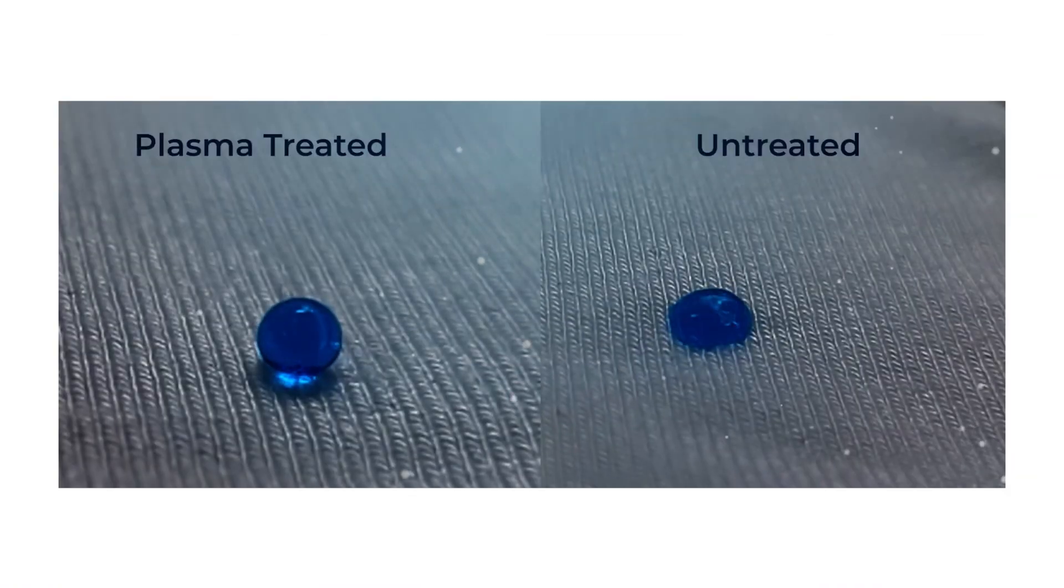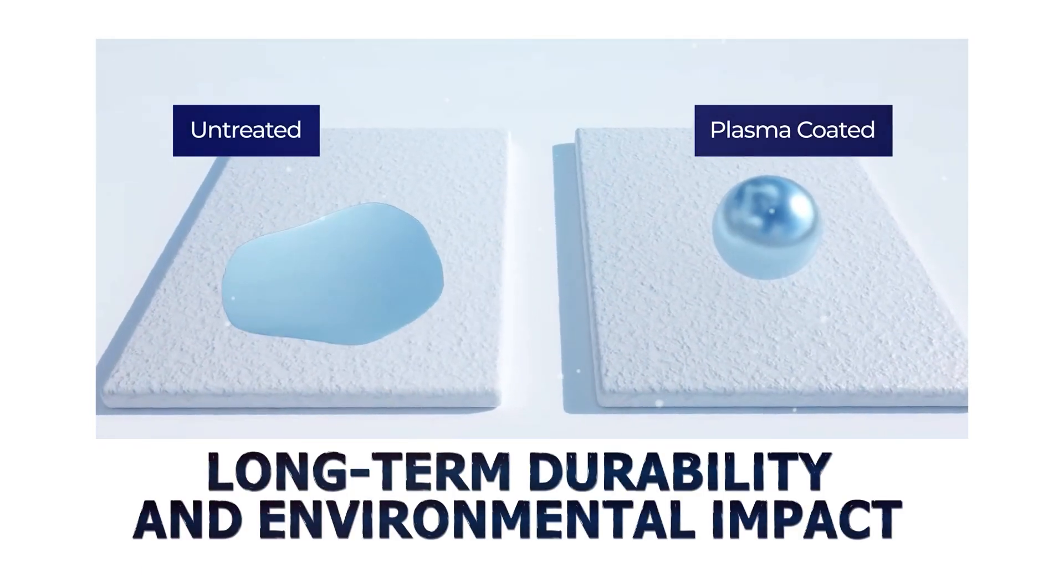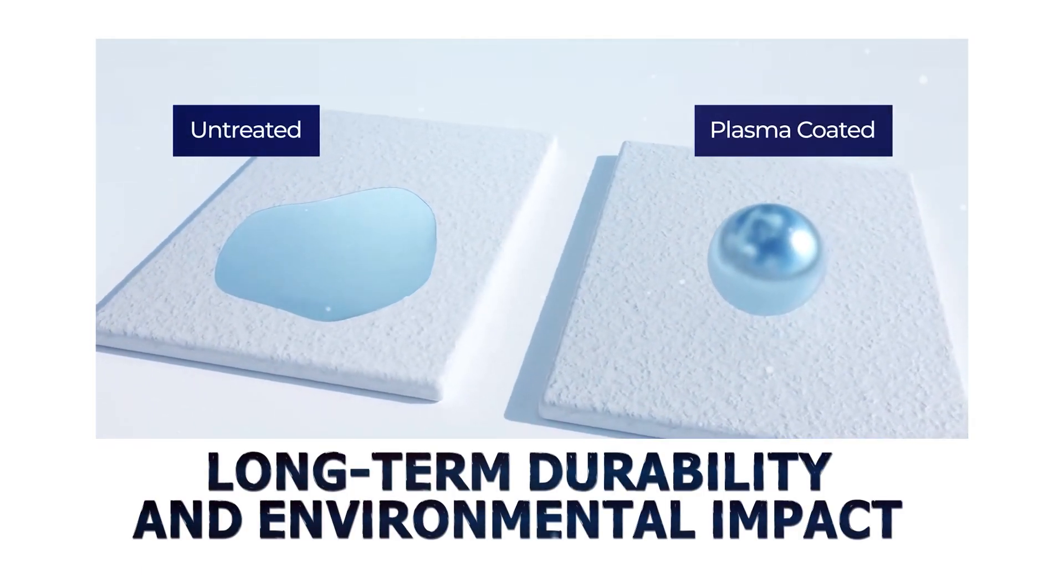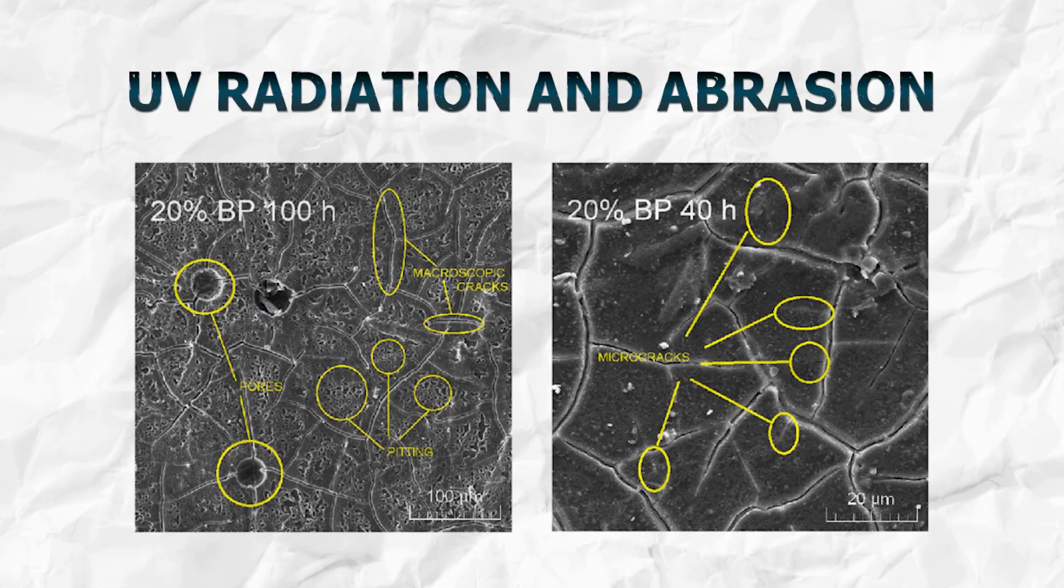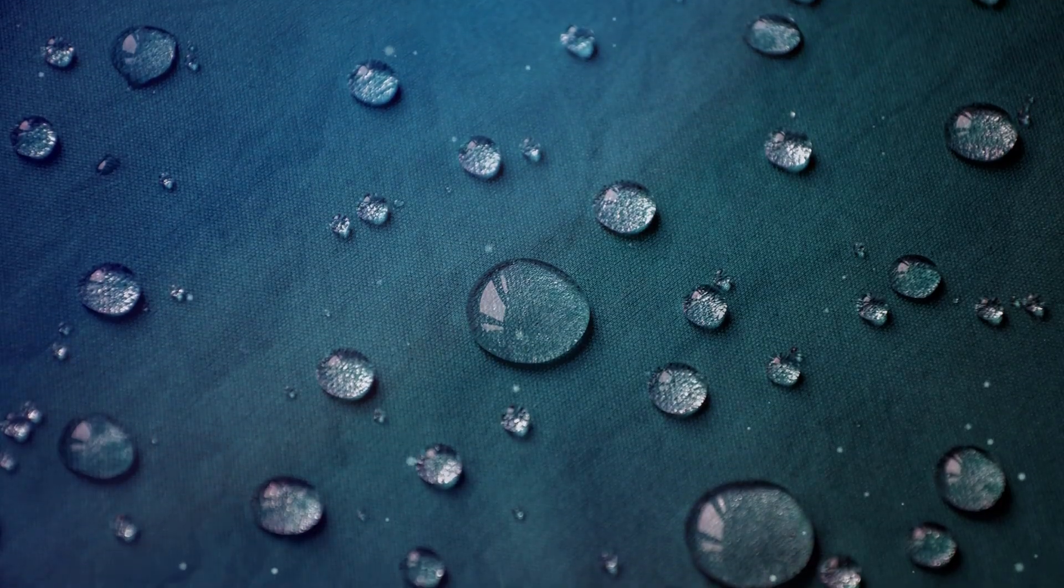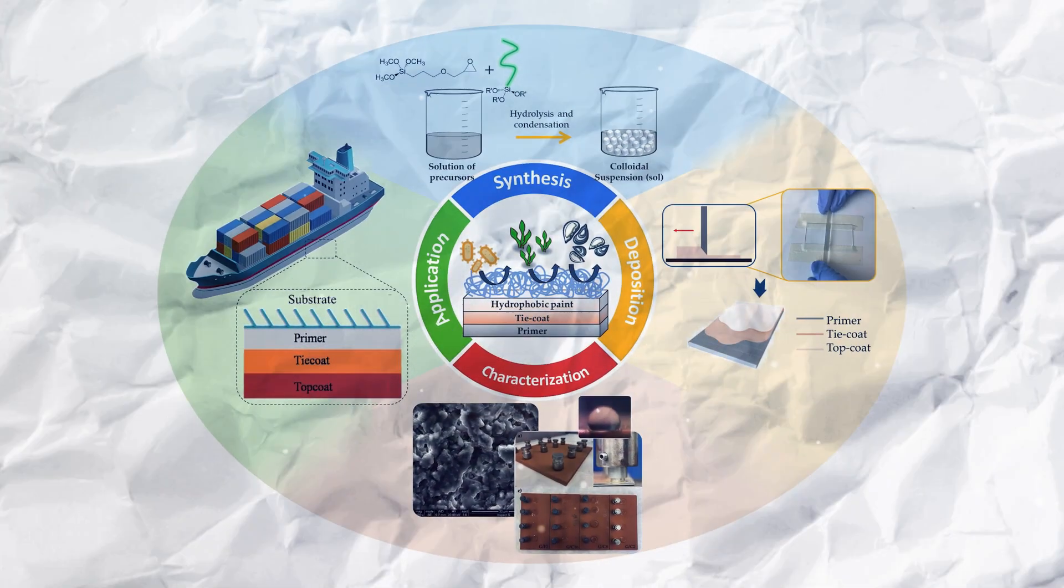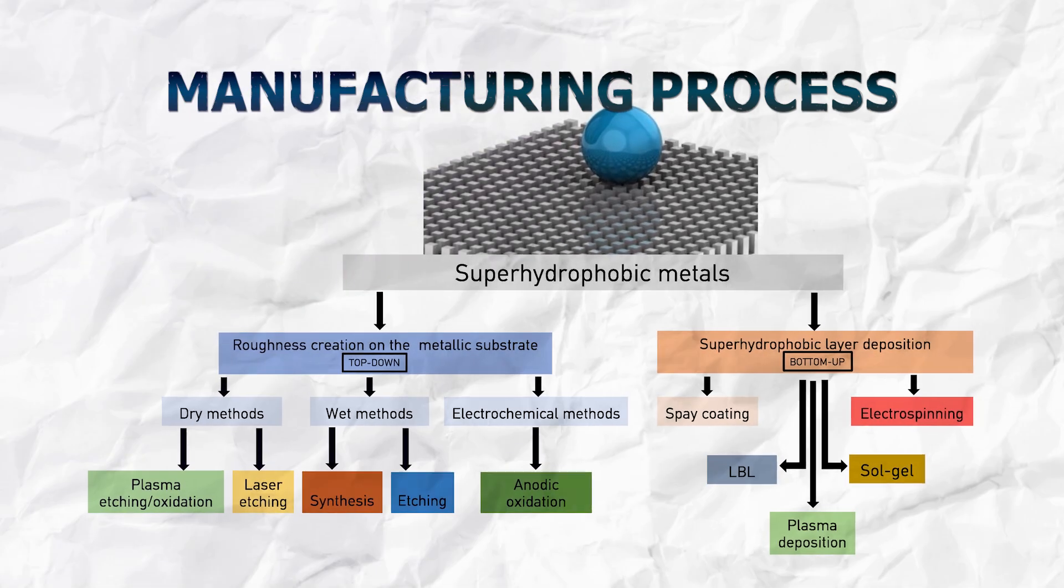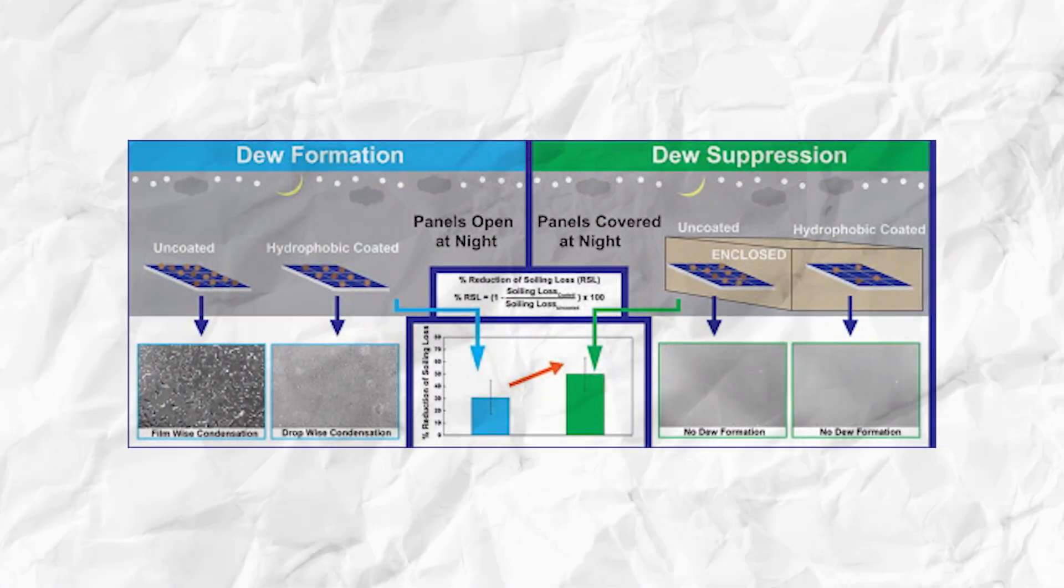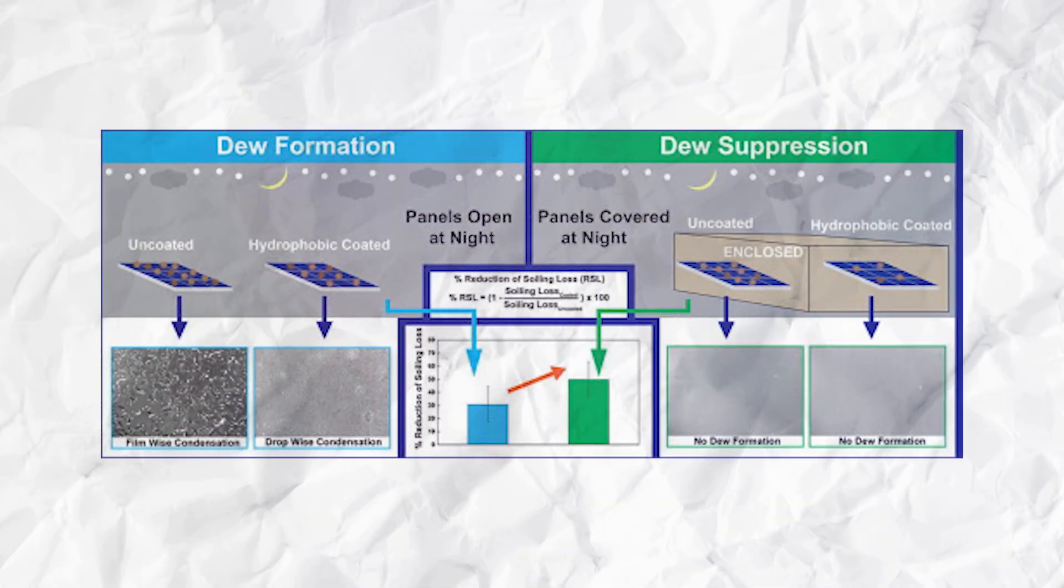While hydrophobic coatings have demonstrated remarkable success, challenges persist, particularly in terms of long-term durability and environmental impact. The durability of coatings under harsh conditions, such as exposure to UV radiation and abrasion, remains a focal point for improvement. Environmental considerations also drive research towards developing eco-friendly hydrophobic coatings. The reduction or elimination of harmful chemicals in the manufacturing process and the biodegradability of coatings are areas garnering attention to ensure sustainability and minimize the ecological footprint of these technologies.